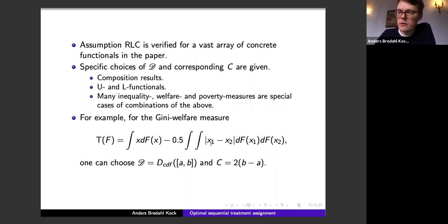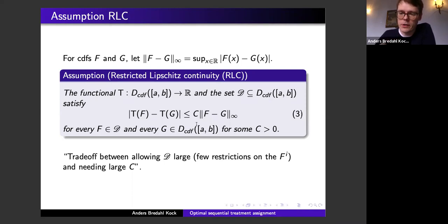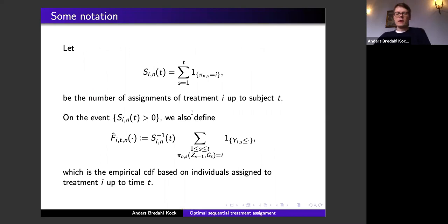The Gini welfare measure equals the mean of the outcome distribution F minus a dispersion term given by a double integral — also known as the Gini inequality measure. If T is the Gini welfare, the Lipschitz constant equals two times the length of the interval [a, b], and no restrictions are needed on the set of potential outcome distributions. We still prove upper bounds on worst-case performance, with an explicit expression for the Lipschitz constant.